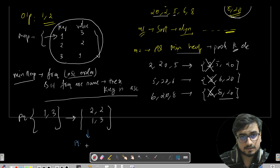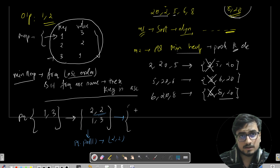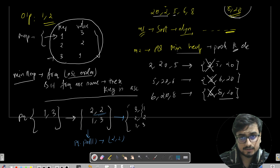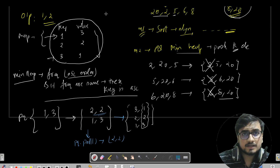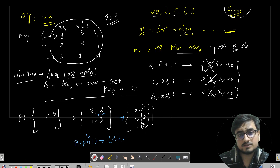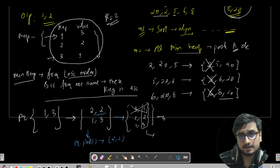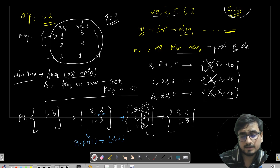Now we add the last pair (3, 1). The PQ rearranges in ascending frequency order: (3, 1) at top, then (2, 2), then (1, 3). Since K equals 2 and the PQ now has 3 elements exceeding K, we run a loop — if pq.size() is greater than K, we call pq.poll(). This removes (3, 1), and the updated PQ has (2, 2) and (1, 3), which is the answer.